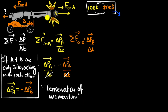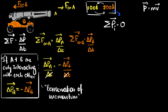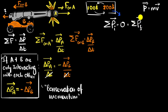Now let's see if we can apply this to answer our original question. We'll consider the case before we shot the cannon. Momentum is mass times velocity. Before we shot the cannon, the cannon was at rest, so its velocity was zero and its momentum was zero. The ball was also at rest, its velocity is zero, so its momentum was also zero. So the total initial momentum before firing was zero. Which means after firing, since we're assuming that they're only interacting with each other, the total final momentum must stay the same — so the total final momentum must also be zero.